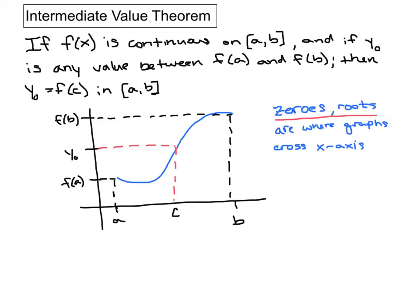For those of you who forgot, zeros and roots are where graphs will cross the x-axis. This is going to be specifically helpful when we start talking about derivatives and minimum and maximums. But for now, we're just going to be talking about making sure that they actually do exist.